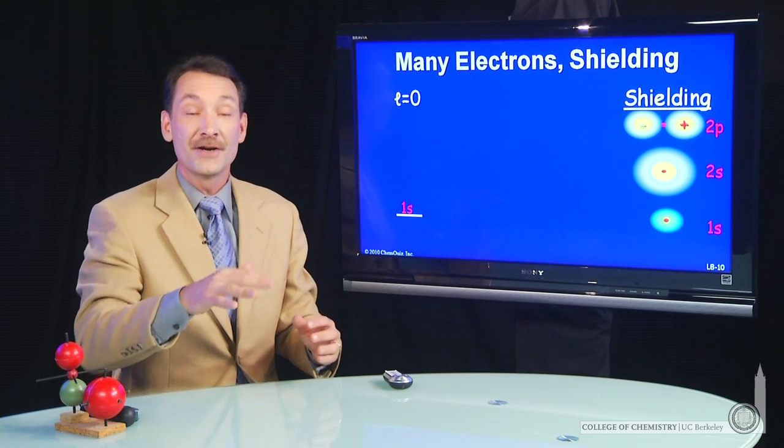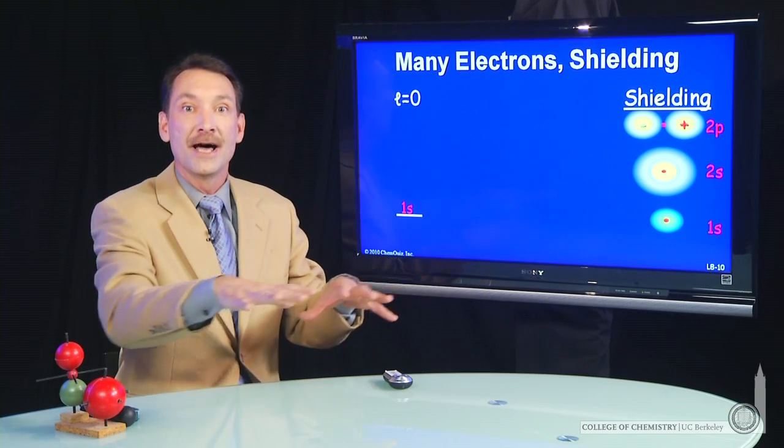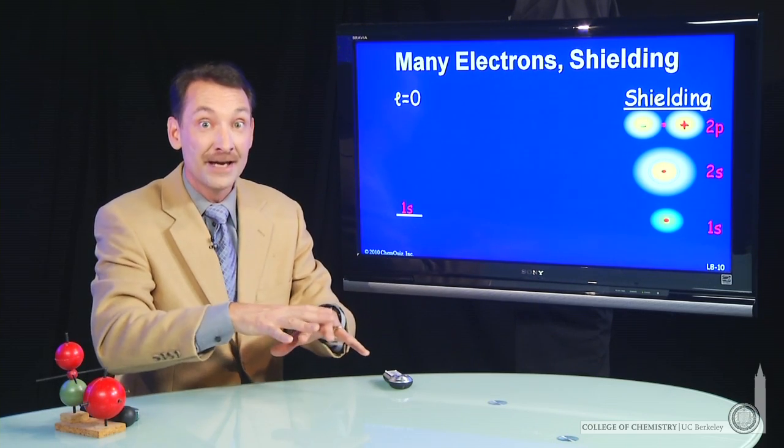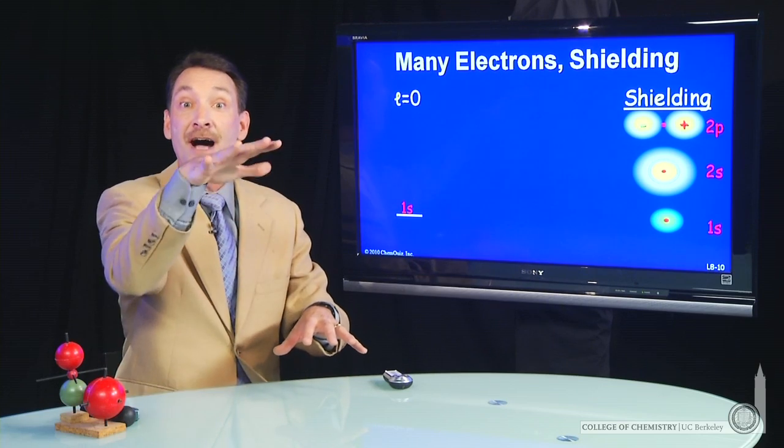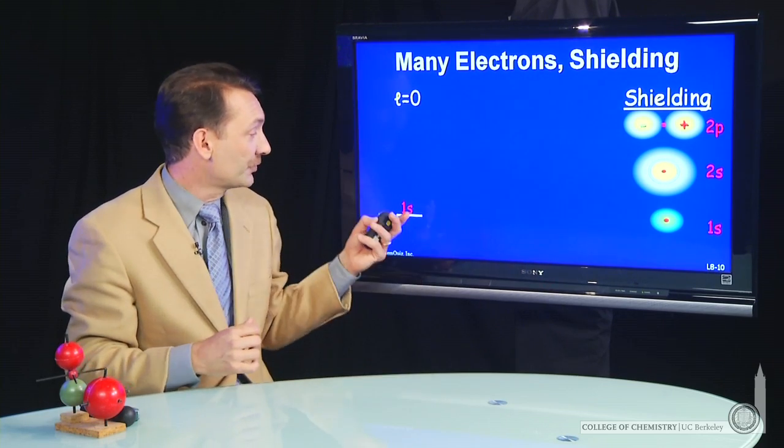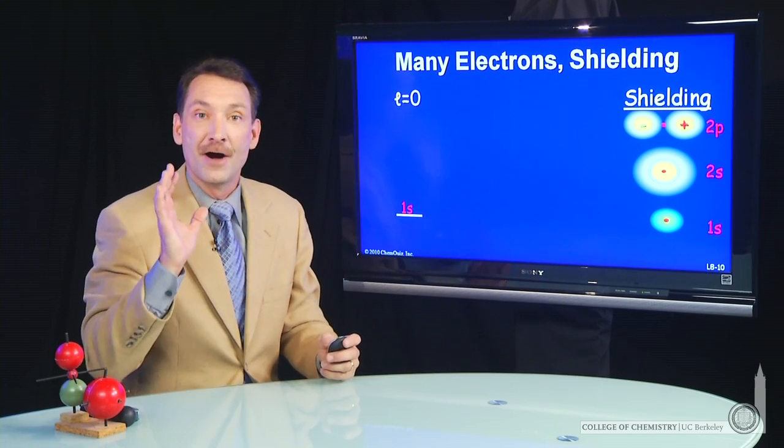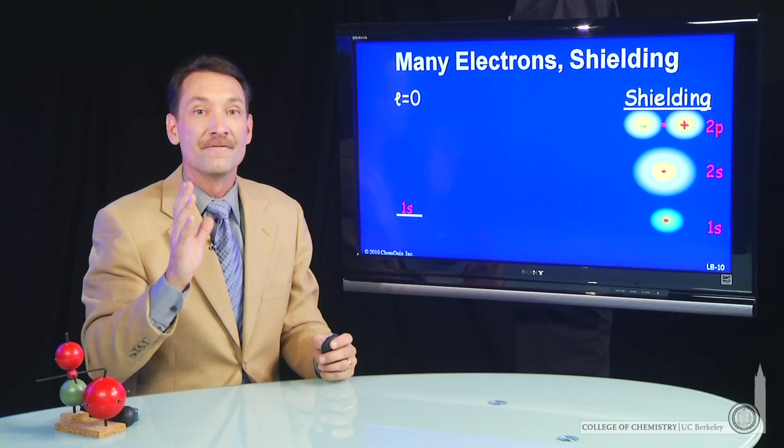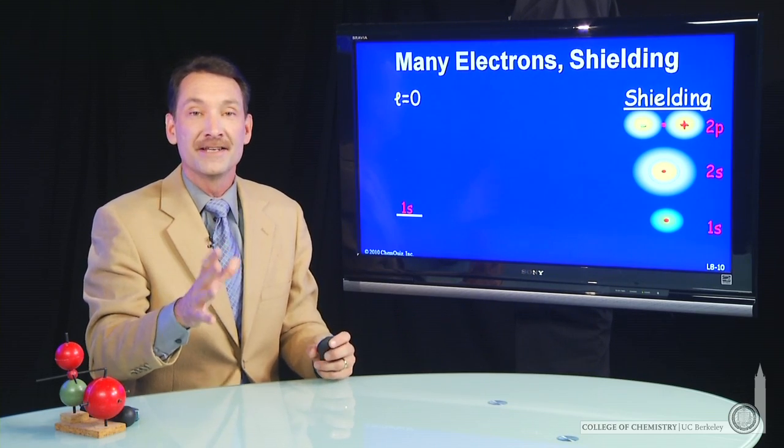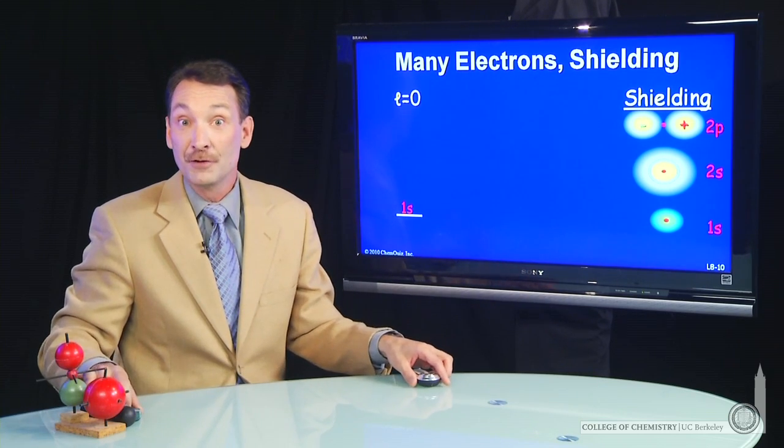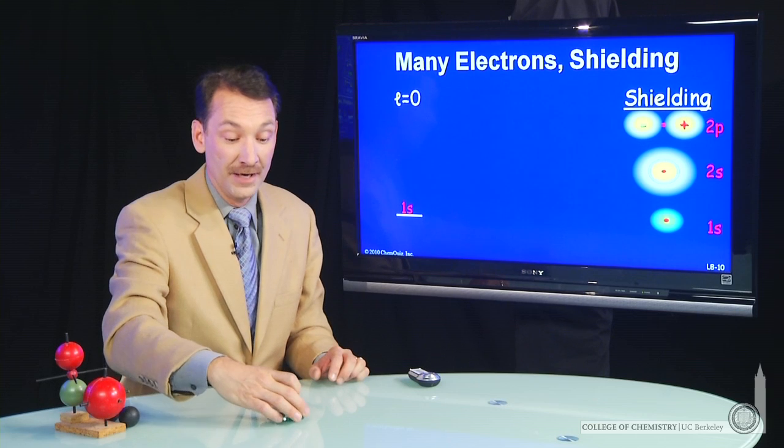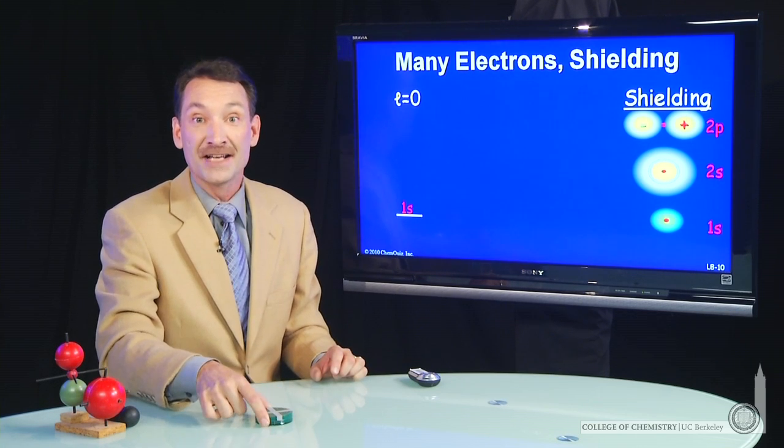So let's look at the various energy levels and how an electron already existing might perturb the energy levels of a higher energy electron. So 1s electrons. Now, s electrons are very good shielders. That is, they can shield some of the nuclear charge from outer electrons. So here's a big nuclear positive charge.